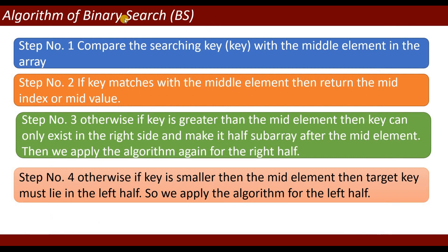The algorithm of binary search: Step 1 — compare the searching key with the middle element. Step 2 — if the key matches the middle element, return the mid index. Step 3 — if the key is greater than the mid element, it can only exist in the right half; apply the algorithm again for the right half. Step 4 — if the key is smaller than the mid element, apply the algorithm for the left half. Thank you, please subscribe to my channel.